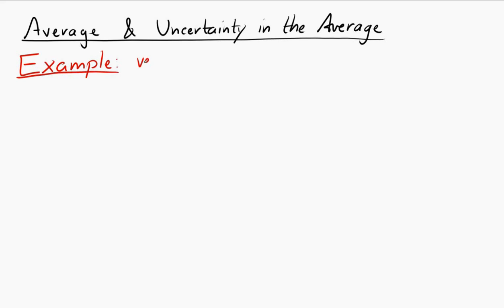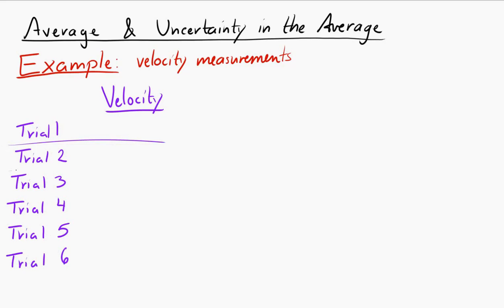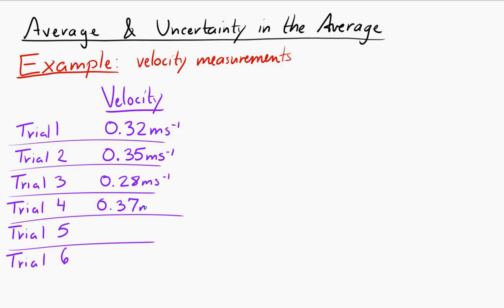Let's say that you measure the velocity of an object and you do the experiment six times. So you have six trials where you measure the velocity, and the values that you get are 0.32 meters per second, 0.35 meters per second, 0.28 meters per second, 0.37 meters per second, 0.29 meters per second, and 0.34 meters per second.